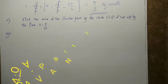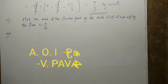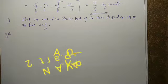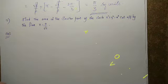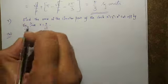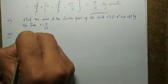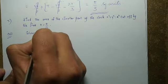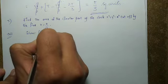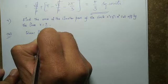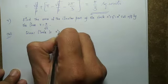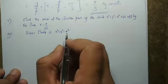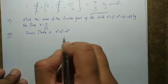Find the area of the smaller part of the circle x² + y² = a² cut off by the line x = a/√2. The given circle is x² + y² = a², where the radius is a units.